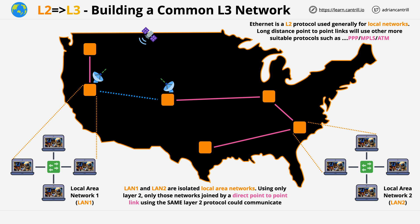Not all of these use frames with the same format, so we need something in common between them. Layer 2 is the layer of the OSI stack which moves frames — it moves frames from a local source to a local destination.